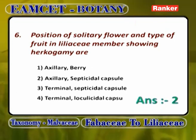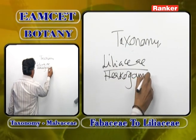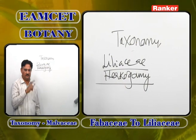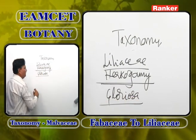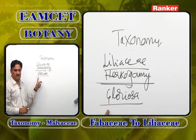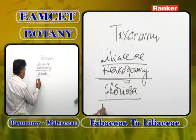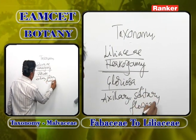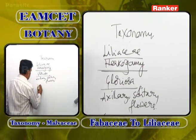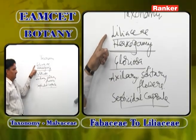Position of solitary flower and type of fruit in a Liliaceae member showing hercogamy. Hercogamy means arrangement of essential organs in different directions — found in Gloriosa. In Gloriosa, androecium and gynoecium are in different directions, preventing self-pollination and promoting cross-pollination. The solitary flower in Gloriosa is axillary.